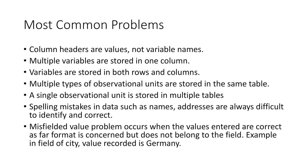The most common problems you may encounter with dirty or messy data: column headers are values, not variable names; multiple variables are stored in one column; variables are stored in both rows and columns; multiple types of observational units are stored in the same table; a single observational unit is stored in multiple tables. Spelling mistakes in data such as names and addresses are always difficult to identify and correct. Misfielded value problems occur when the values entered are correct as far as format is concerned, but do not belong to the field — for example, in a field for city, the value recorded is Germany. But these are avoidable with good data collection practices, and our goal is to get quality data.